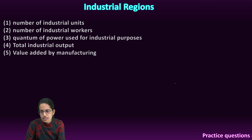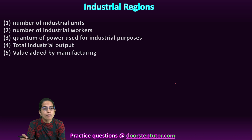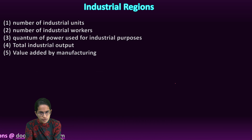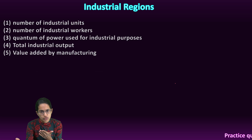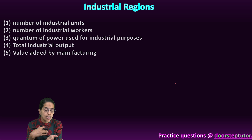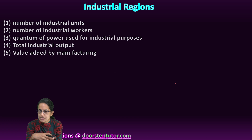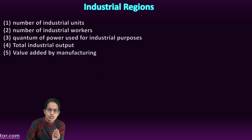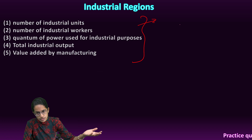Let's understand how these industrial clusters are defined. The first factor is how many industrial units are there, how many industrial workers are there, how much power is utilized for industry, what is the total industrial output from the region, and whether there is any value addition by the process of manufacturing. Based on these five parameters, we identify the different industrial areas.